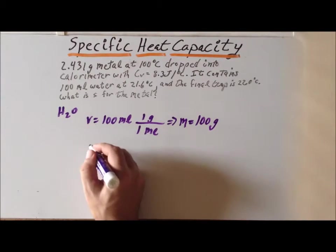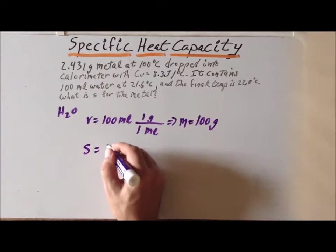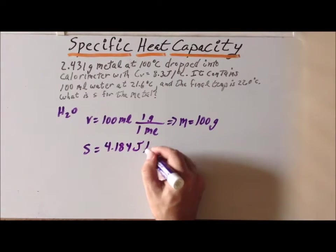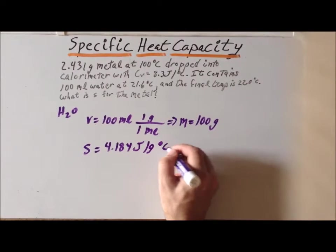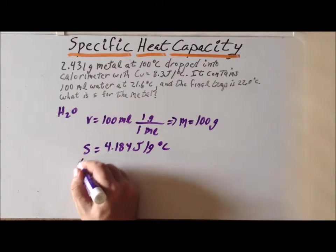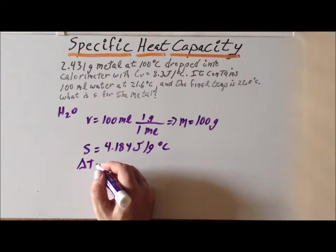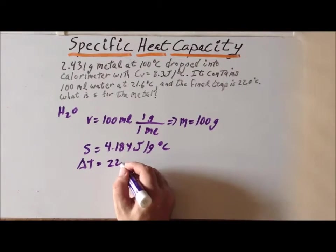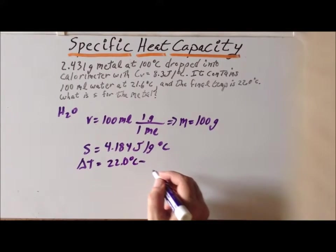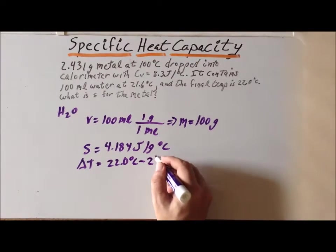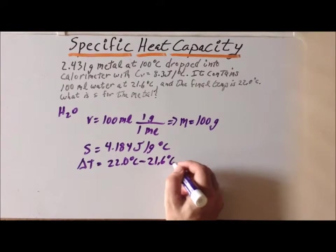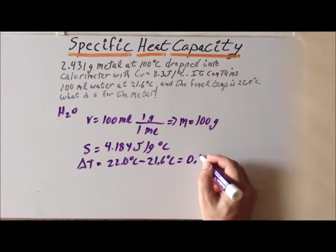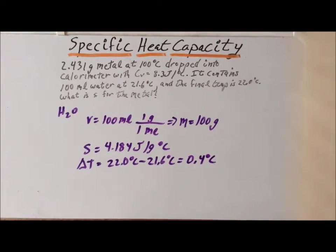The specific heat capacity of water is 4.184 joules per gram degrees centigrade. And the change in temperature is, since it ends at 22 degrees centigrade, that's our final, minus the initial, which is 21.6 degrees centigrade. That gives us a delta T, a change in the temperature, of 0.4 degrees centigrade.